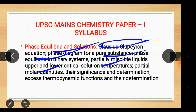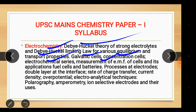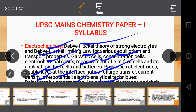Partial molar quantities, their significance and determination, excess thermodynamic functions and their determination. Electrochemistry: Debye-Hückel theory of strong electrolytes, Debye-Hückel limiting law for equilibrium and transport properties, galvanic cells, concentration cells, electrochemical series, measurement of EMF of cells and its applications, fuel cells and batteries, processes at electrodes, double layer at the interface, rate of charge transfer, current density, overpotential, electroanalytical techniques — polarography, amperometry, ion selective electrodes and their uses.